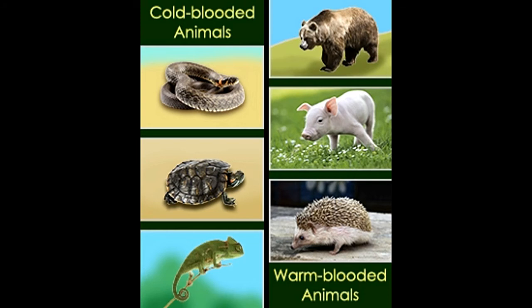On the basis of regulation of body temperature, all animals are categorized into two groups. Mammals and birds are generally warm-blooded animals, whereas fish and reptiles are cold-blooded animals. This post provides you with a detailed comparison of these two categories of animals.